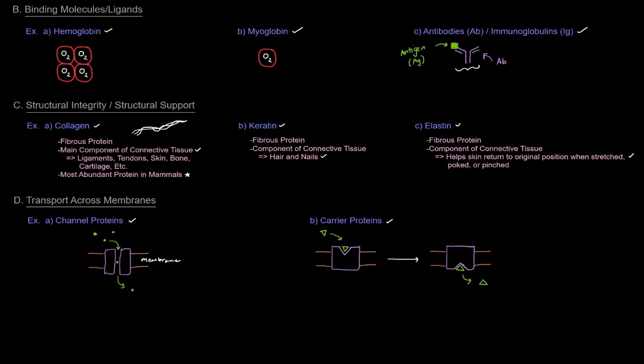Whereas carrier proteins, they function a little bit differently. They will go through and bind something on one side of a membrane, and then the protein will sort of change its conformation, and then spit the particle out on the other side of the membrane. So here, the particle doesn't pass through the protein. The protein is not just a tube, but it actually gets carried across over to the other side. So both of these types of proteins accomplish a similar thing in that they're allowing something from one side of a membrane to the other. They just do it in different ways.